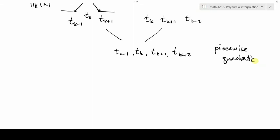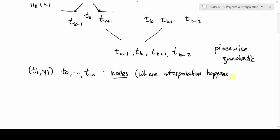Before we can do that, though, we have to now make a distinction that we didn't have to before. So the problem that we're given is data in the form of a bunch of points, ti, yi, t0, the t's go from t0 to tn. These are our nodes. They are where interpolation happens.